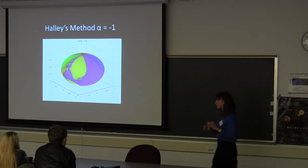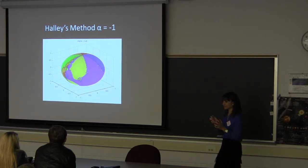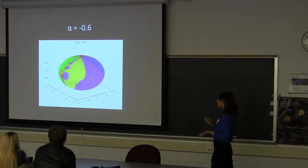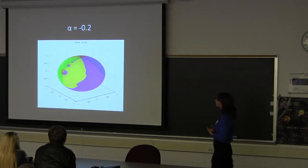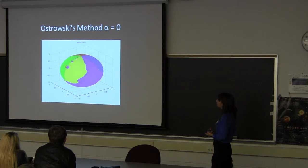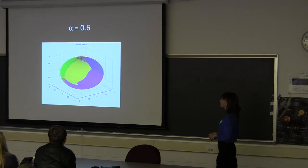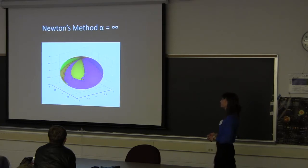So, Healy's method, alpha equal to negative one. Alpha equal to negative 0.6. Alpha equal to negative 0.2. Ostrowski's method, alpha equal to zero. Lockyer's method, alpha equal to one-fifth. Alpha equal to 0.6. Euler's method, alpha equal to one. Newton's method, alpha equal to infinity.